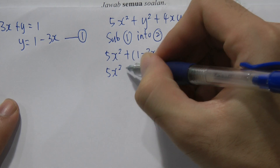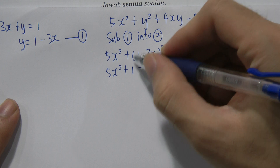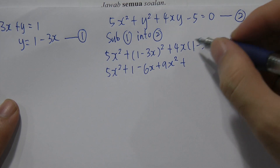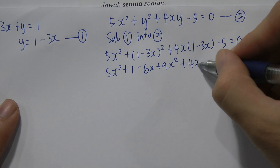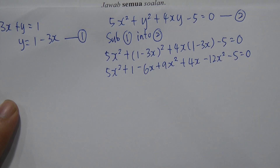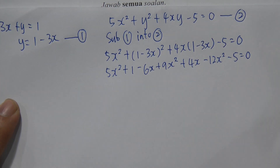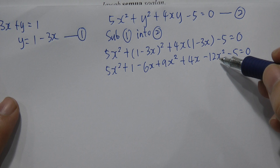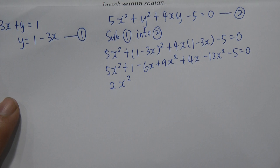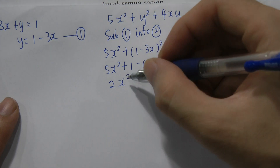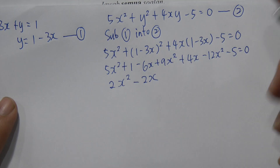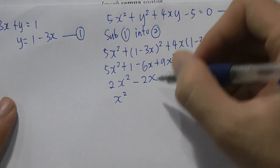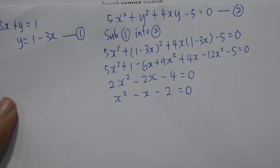Expanding the whole equation: 5x² + (1 - 6x + 9x²) + (4x - 12x²) - 5 = 0. Collecting x² terms: 5x² + 9x² - 12x² = 2x². Collecting x terms: -6x + 4x = -2x. Constants: 1 - 5 = -4. So 2x² - 2x - 4 = 0. Dividing through by 2 gives x² - x - 2 = 0.